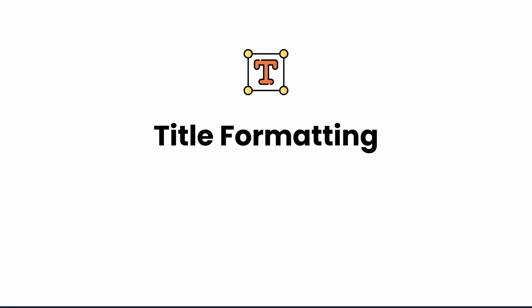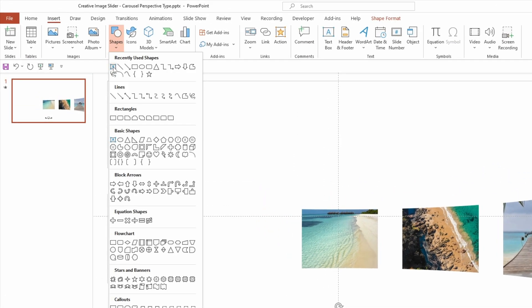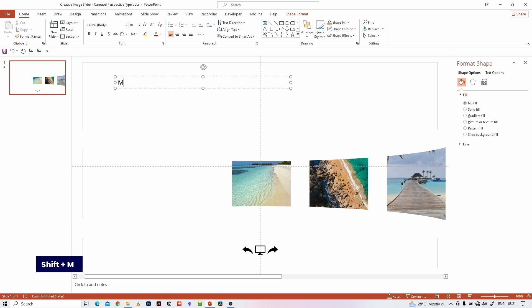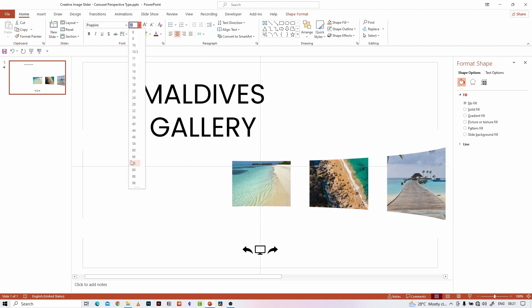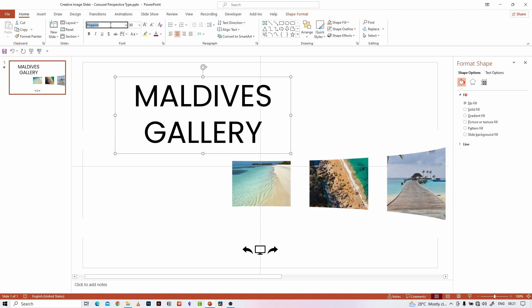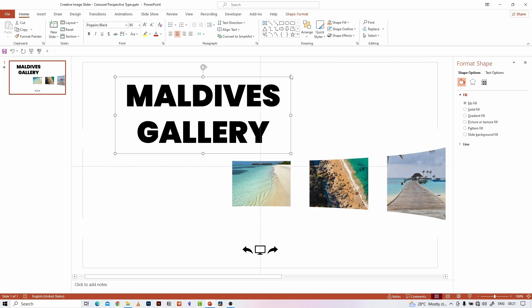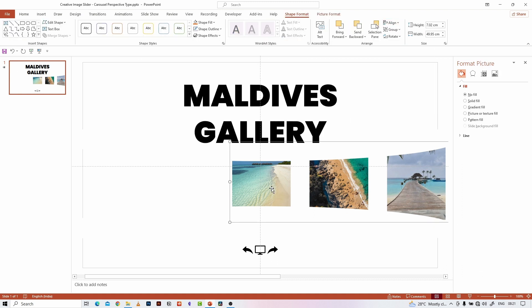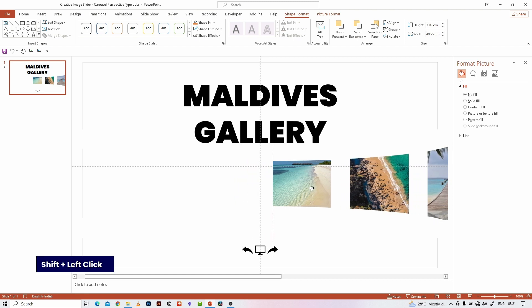Let's see the basic title format. Formatting is more important when it comes to designing a slide. Go to the Insert tab, click on Shapes and select the Text Box. Place the text box like this and write the title you want. Play with the text formatting options to get the output we want. Align the images and title properly since it is the first slide of our presentation.